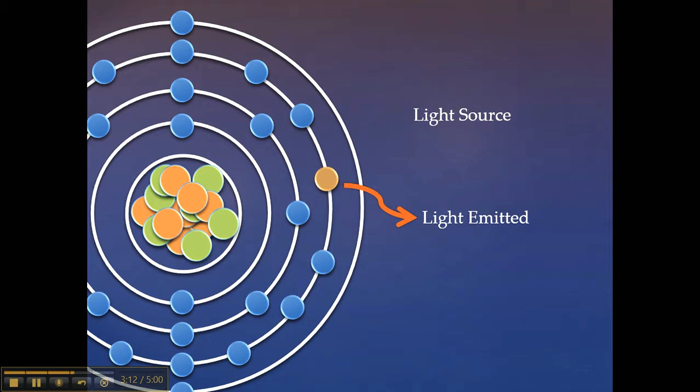Further, we can determine how much of the element is in the sample if we measure the wavelength of light that is emitted from the atom when the electron relaxes to see how bright this specific wavelength of light is. The brighter the light means the more of that element is found in the water sample.